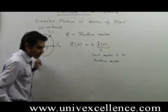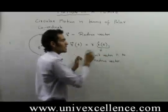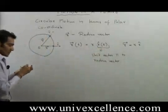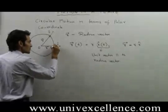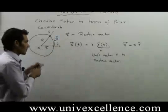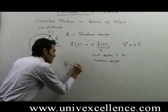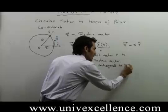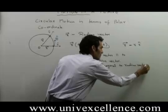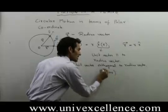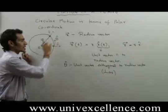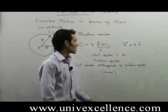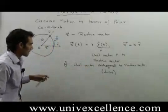Since these are functions of time, this is sometimes simply written as r = r · r̂, dropping the time notation. Now we define one more vector, denoted by θ̂. This θ̂ is a unit vector orthogonal to the radius vector, and since it is perpendicular to the radius vector, it is also perpendicular to the unit vector r̂.